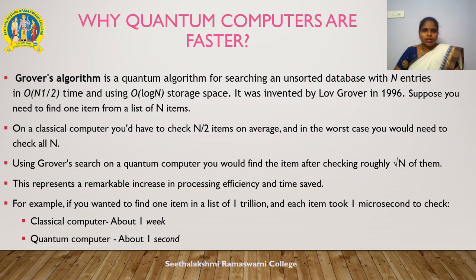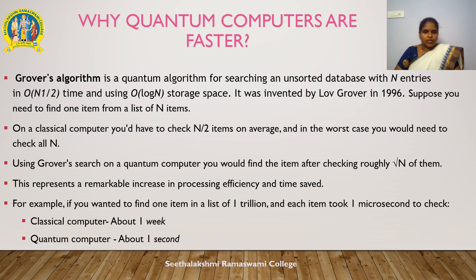One promising quantum algorithm called Grover's search makes quantum computers faster. It is a quantum algorithm for searching an unsorted database with n entries in O(√n) time using O(log n) storage space. On a classical computer, you would need to check n/2 items on average, or in some cases all n. Using Grover's search, a quantum computer finds the item after checking roughly √n of them. For example, to find one item in a list of 1 trillion where each item takes 1 microsecond to check, a classical computer would take about one week, whereas a quantum computer completes the job in a second.